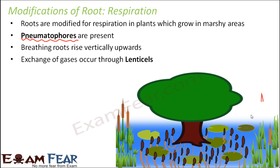Now, what is present in these pneumatophores that actually helps in exchange of gases? Exchange of gases has to happen through some kind of pores. It occurs with the help of small pore-like structures known as lenticels. These lenticels are present in the spike-like structures and allow exchange of gases. These are spongy erect roots.